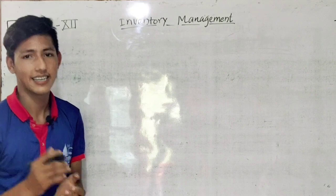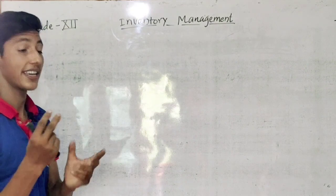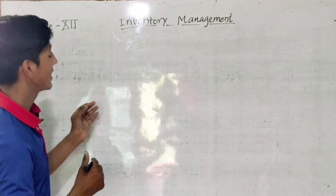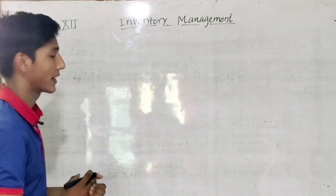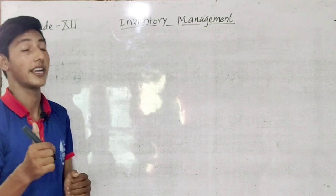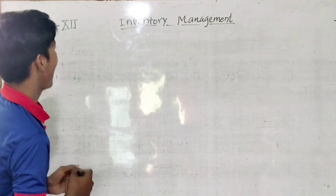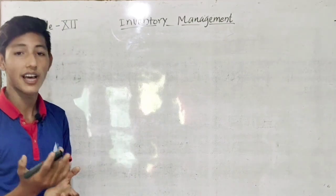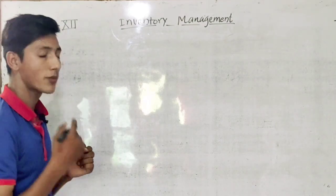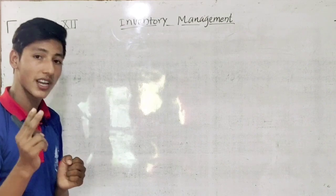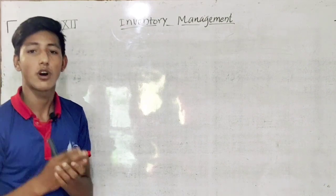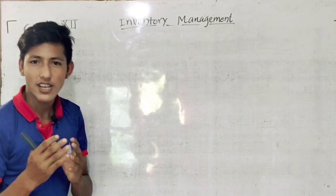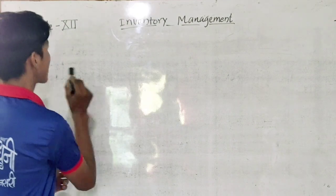I am going to talk about the exam point, 2 max, and A plus. Today I am going to talk about inventory. What is this formula? Inventory management — we are going to talk about 2 max, stock level, and economic order quantity. Today I am going to talk about educational tips.